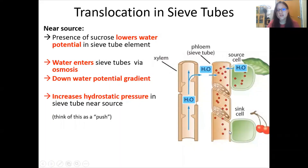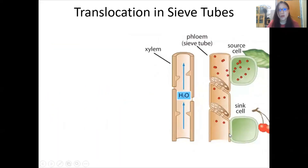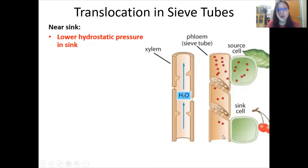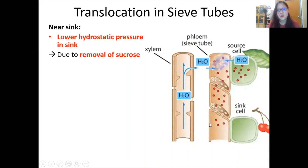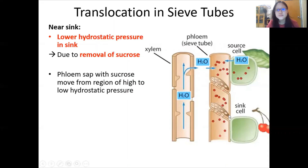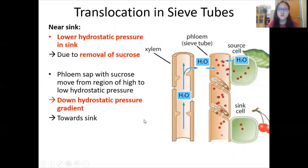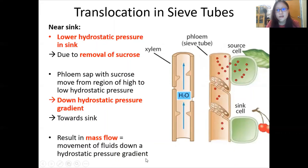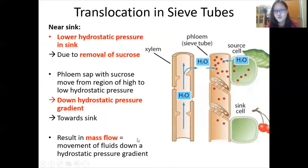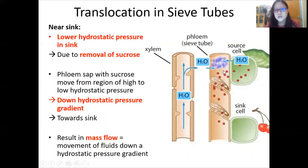Near the sink, there is a lower hydrostatic pressure due to the removal — the unloading — of sucrose from the sieve tube. Therefore, phloem sap is always moving from a region of high to low hydrostatic pressure, down the hydrostatic pressure gradient towards the sink — not necessarily upwards or downwards, but towards the sink. This movement of fluids down a hydrostatic pressure gradient is called mass flow. Mass flow is what causes the transport of sucrose from sieve tubes near the source to sieve tubes at the sink.